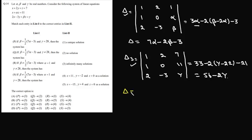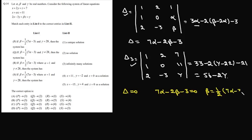First we'll take the condition when delta is equal to zero. If delta equals zero, then 7 alpha minus 2 beta minus 3 equals zero. That means beta is equal to one half of (7 alpha minus 3), which is given in options p and q. So for both these options, delta is zero.